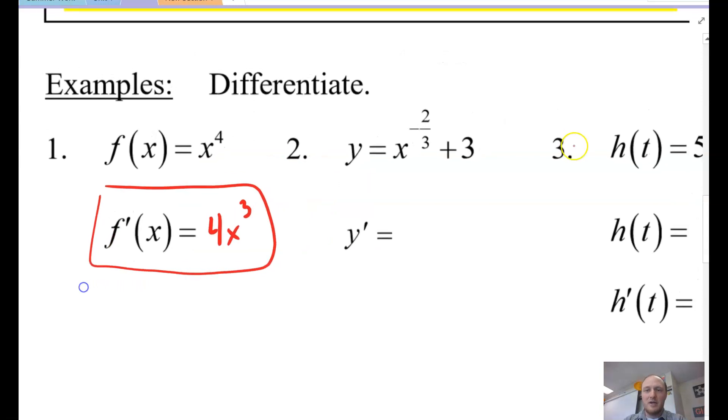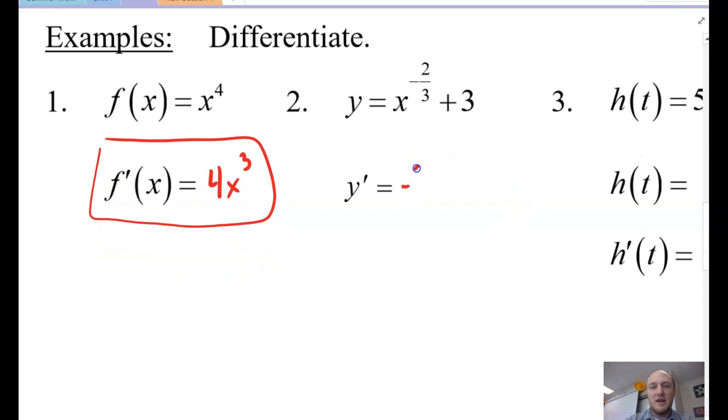Example two. Uh-oh. Fractions. I'm going to bring down the power. So negative 2/3 times x. And then I have to drop the power by 1. Well, how do I drop negative 2/3 by 1? Well, you just subtract 1. It's that easy. 1 is 3/3. So then negative 2 take away 3, negative 5/3. See? Fractions aren't that scary. Don't be scared.